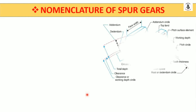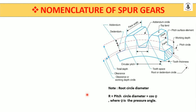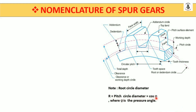Now, looking at the figure, you can see that capital R is noted as the pitch circle diameter multiplied by cos φ (or cos ψ), where ψ is the pressure angle.